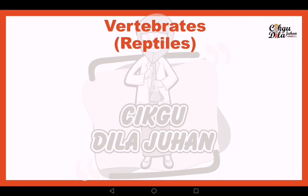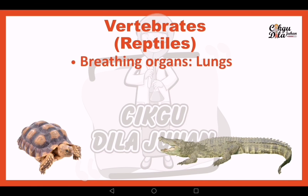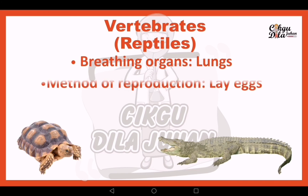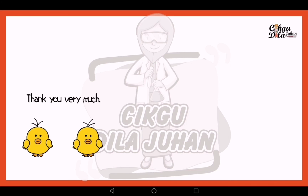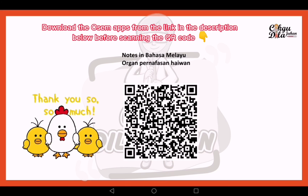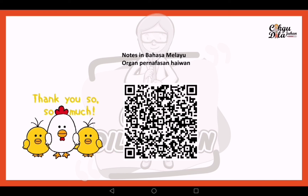The next vertebrate type is reptiles. Examples include tortoise and crocodile. Scan this QR code to get a note in Bahasa Melayu.